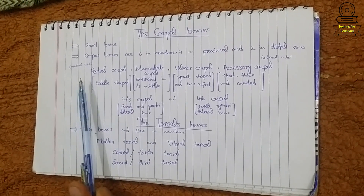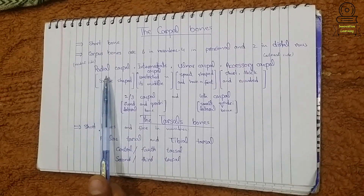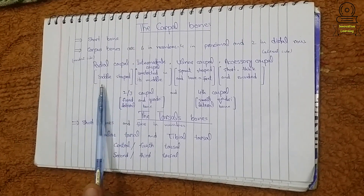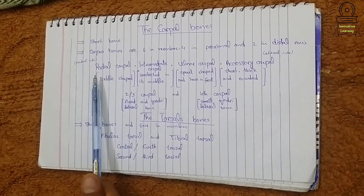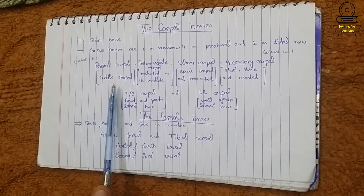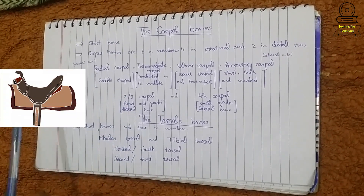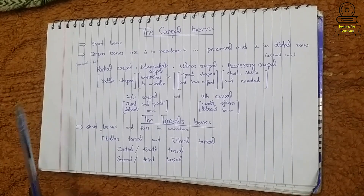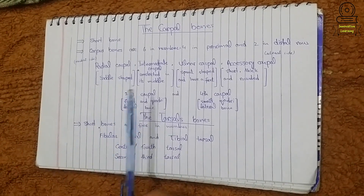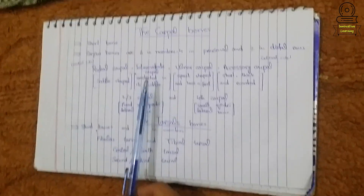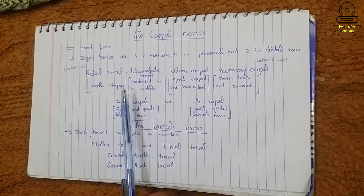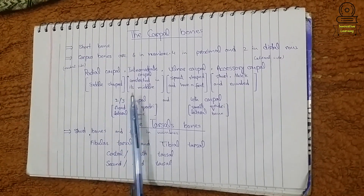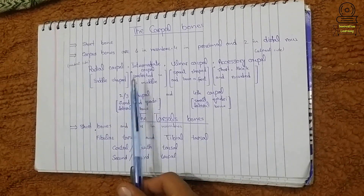The radial carpal is present on the medial side of the forelimb. We can easily identify the radial carpal because it is saddle-shaped. The next carpal is the intermediate carpal, which is constricted in its middle.